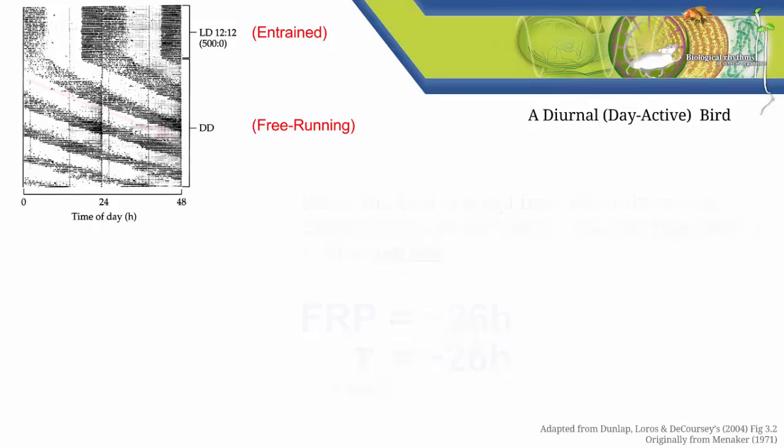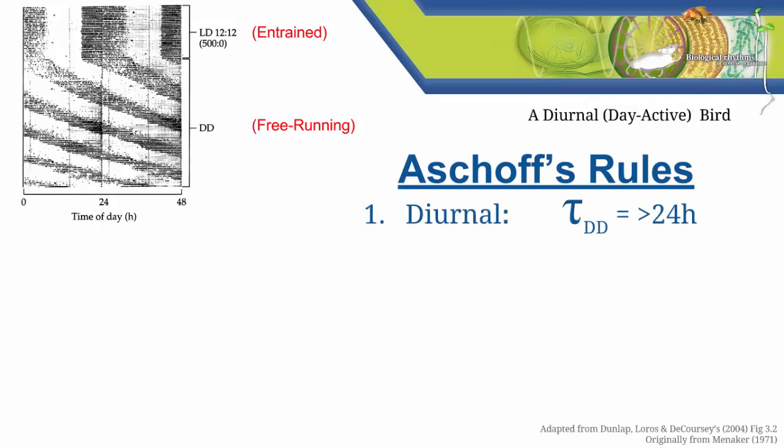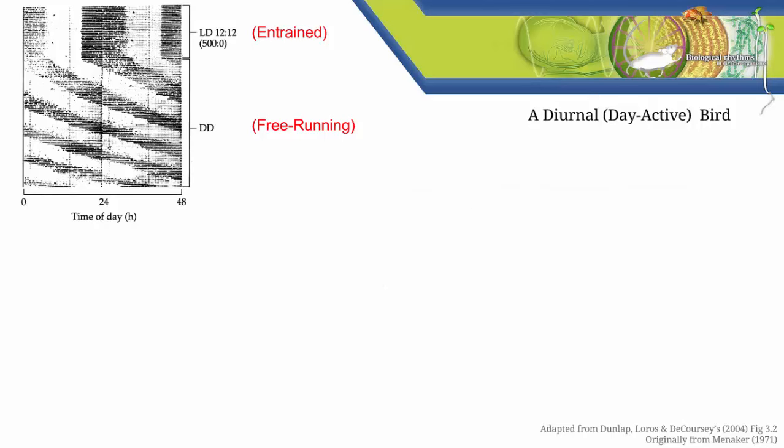Now that you know the basics of FRPs it's time to talk about Ashoff's rules. FRPs tend to be different in different kinds of organisms. Ashoff's first general rule describes the case we've just discussed. The rule is that in general a diurnal organism placed in constant darkness has a free running period of greater than 24 hours. That's just what we've seen in the case of this diurnal bird. Ashoff's second general rule is that the opposite is true in nocturnal organisms. In general a nocturnal organism placed in constant darkness has a free running period of less than 24 hours.